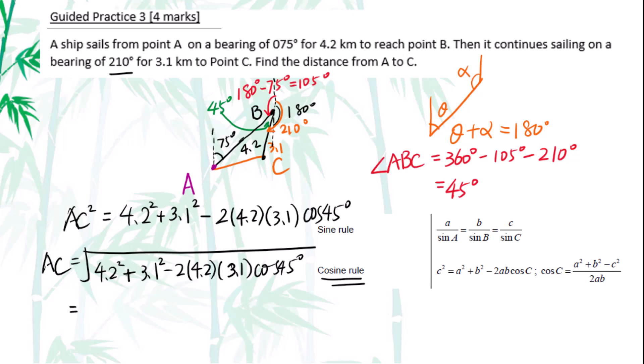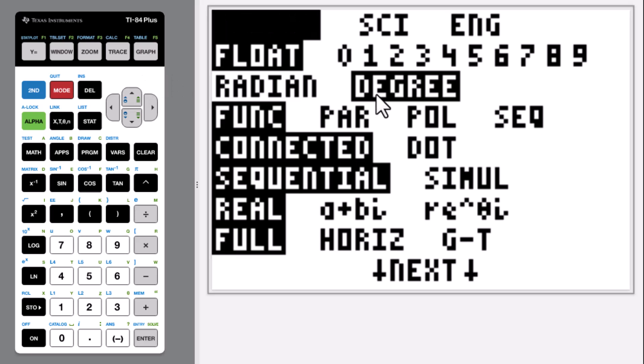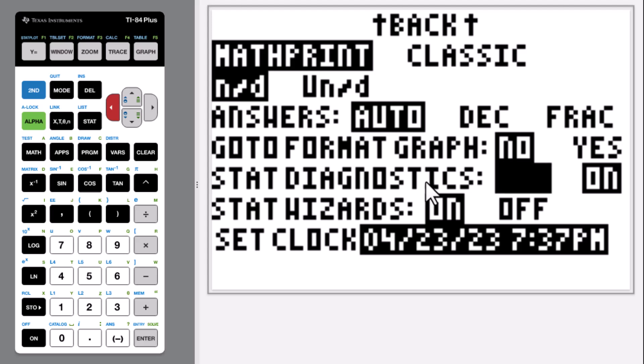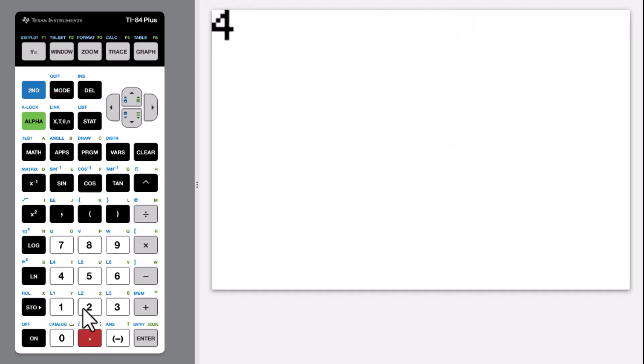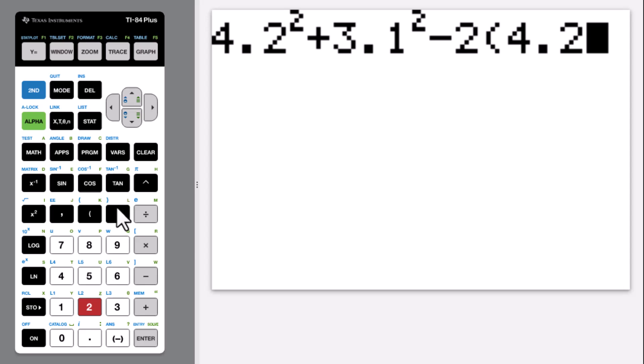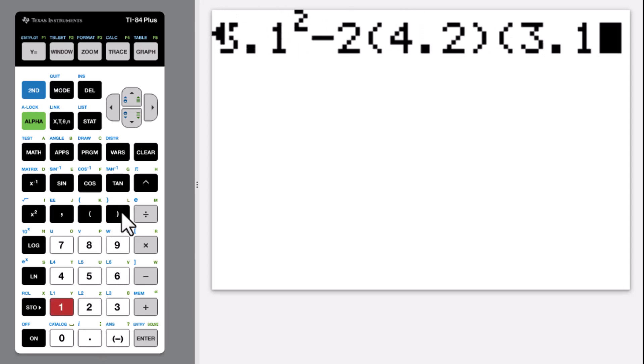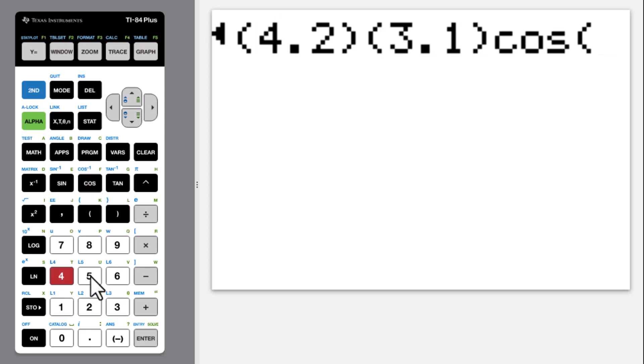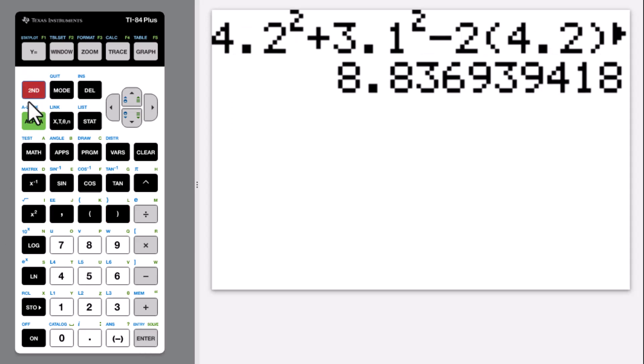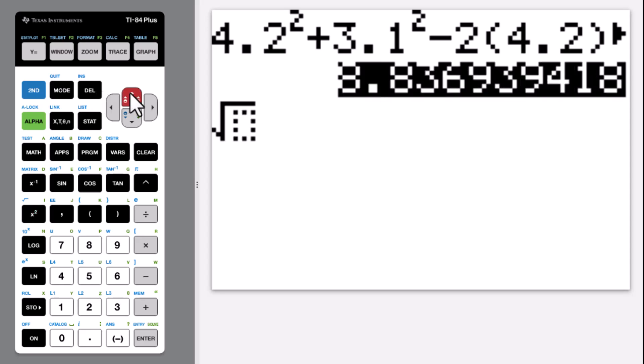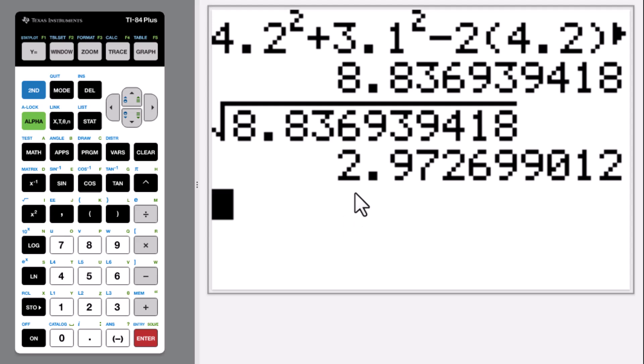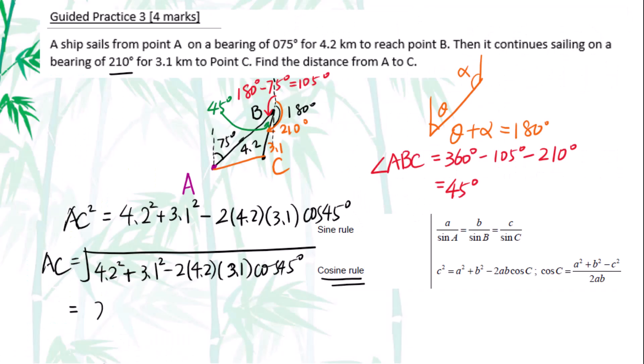AC equals - make sure your mode is in degree and also stat diagnostics on - 4.2 square plus 3.1 square minus 2 times 4.2 times 3.1 cosine 45 degrees then second x squared get square root. Answer is 2.97 kilometers between A and C.